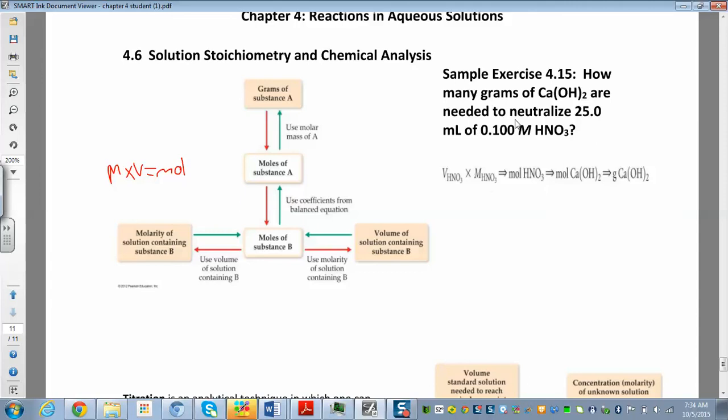In this problem here, they give us a neutralization reaction. We have a base, calcium hydroxide, and we have nitric acid. They say how many grams of calcium hydroxide do we need to neutralize a certain amount of nitric acid? So let's write our acid-base reaction here. We have nitric acid and calcium hydroxide.